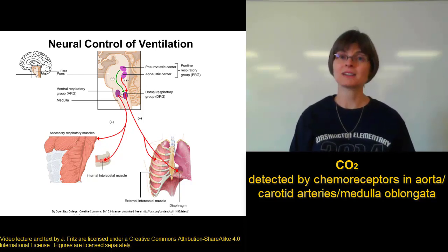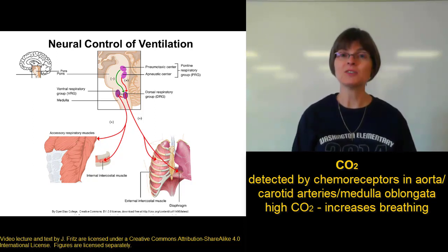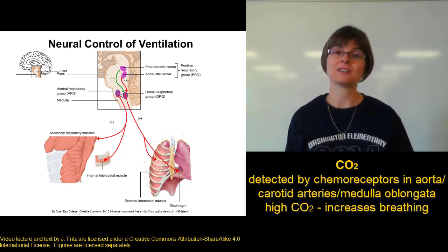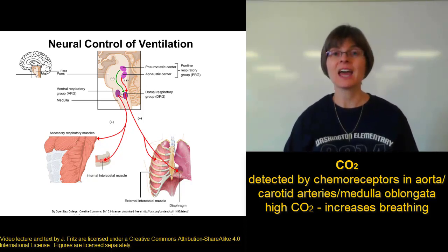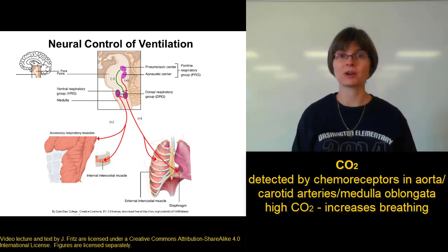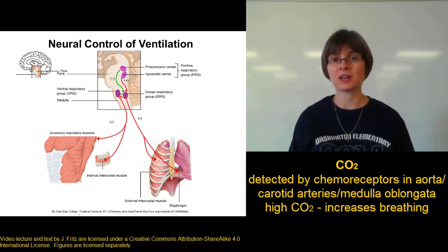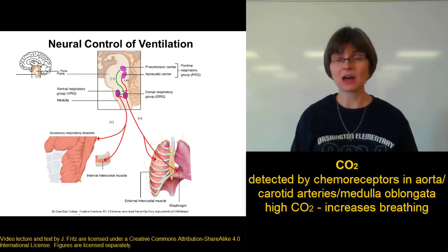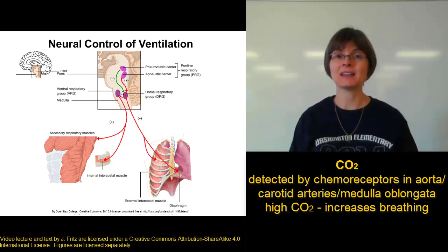If the carbon dioxide in the blood is too high, that's going to make the pH too low. The chemoreceptors will send a signal up to the brain saying the carbon dioxide is too high. The dorsal respiratory group, which receives that information, will send signals to the ventral respiratory group and tell it to increase the rate of breathing. You'll breathe faster, that will blow out more CO2, reducing the CO2 in the body and letting the blood pH come back up where it belongs.